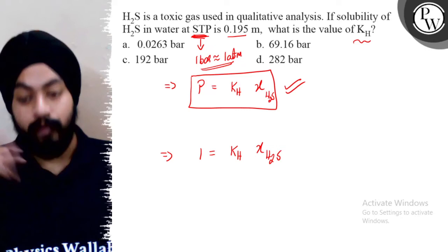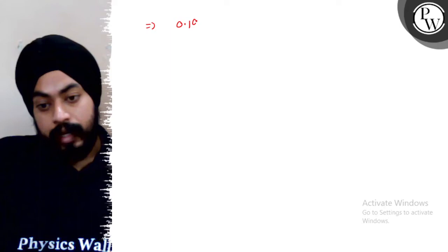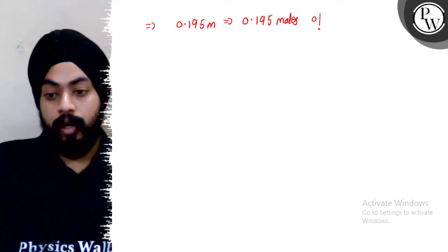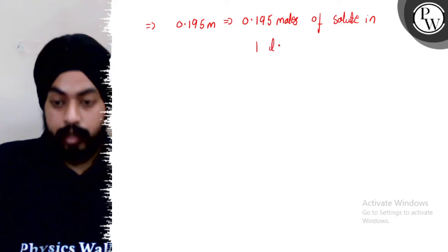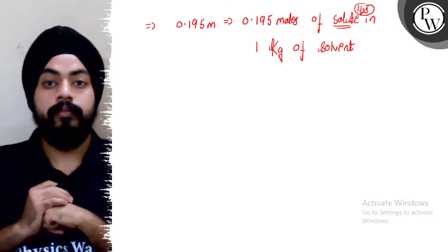And we have to substitute the mole fraction and we have to give an answer. Now let's see, I have to take the mole fraction of H2S. So 1 kg of solvent, this will be moles of H2S upon moles of H2S plus moles of solvent.